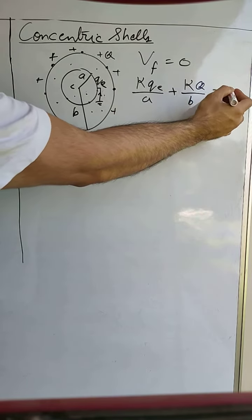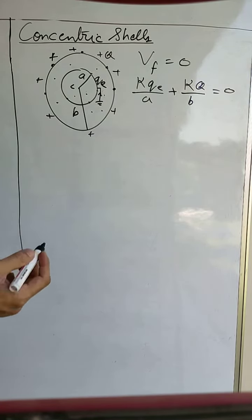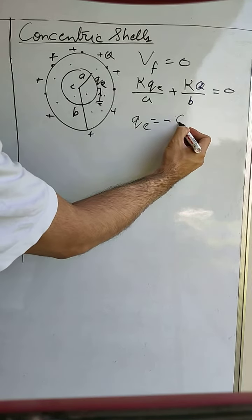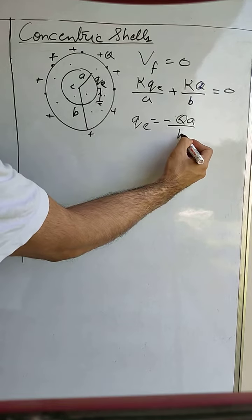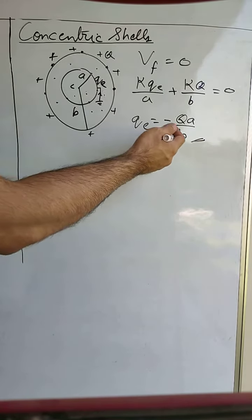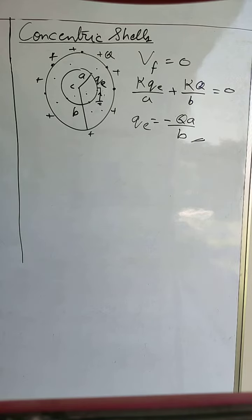So now this should be equal to 0 because it is earthed. And when we calculate this, we will find out that QE will be equal to minus QA upon B. So this is how you can find out charge required to make the potential of the inner shell 0 in this particular case of concentric shells.